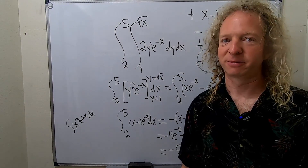Follow the arrows. This times this — pulling out the negative, we get negative x minus 1 times e to the negative x. Follow the next arrow: minus negative e to the negative x. And we're evaluating from 2 to 5.